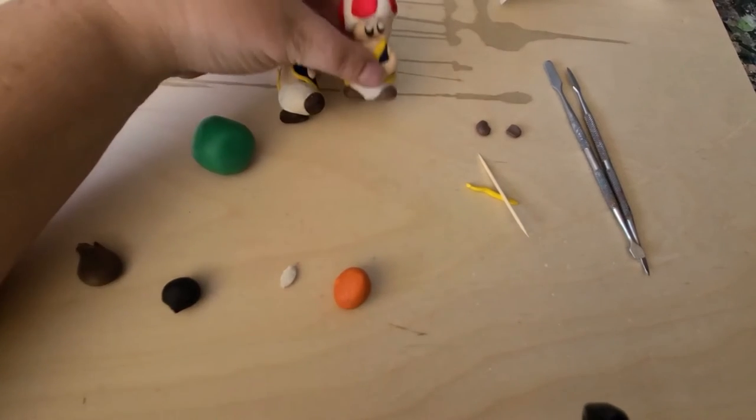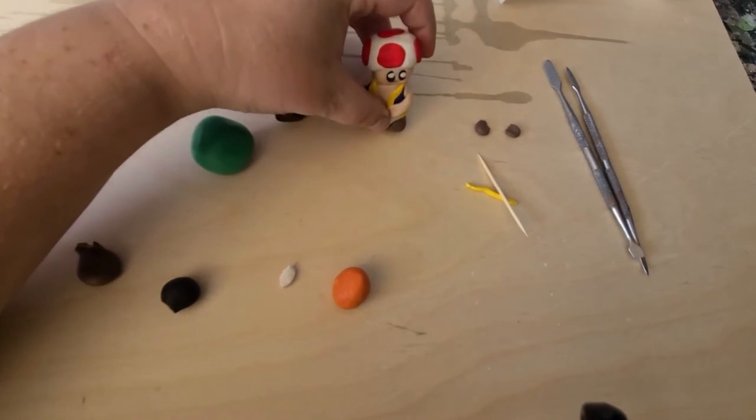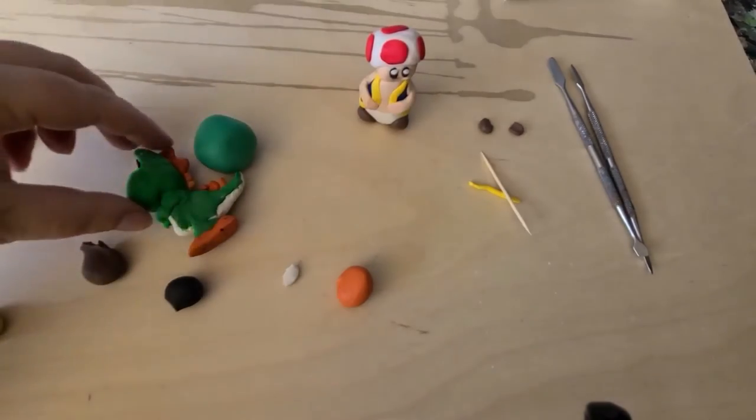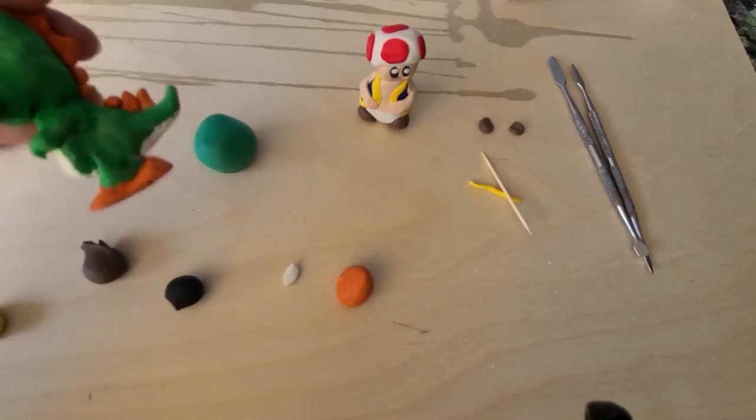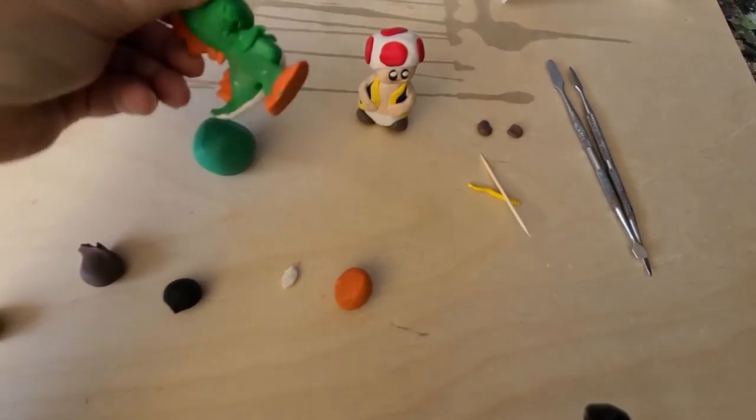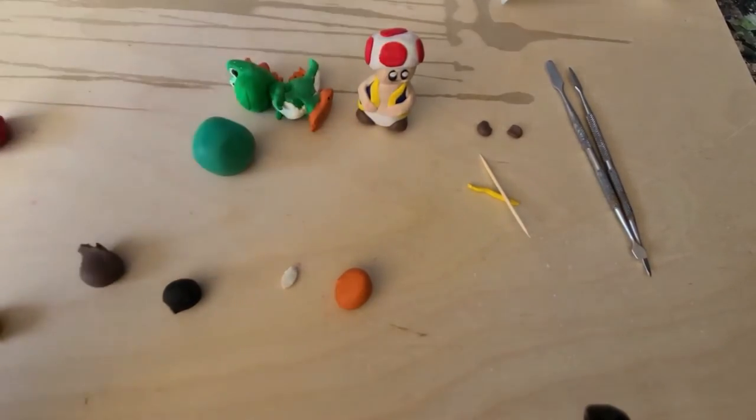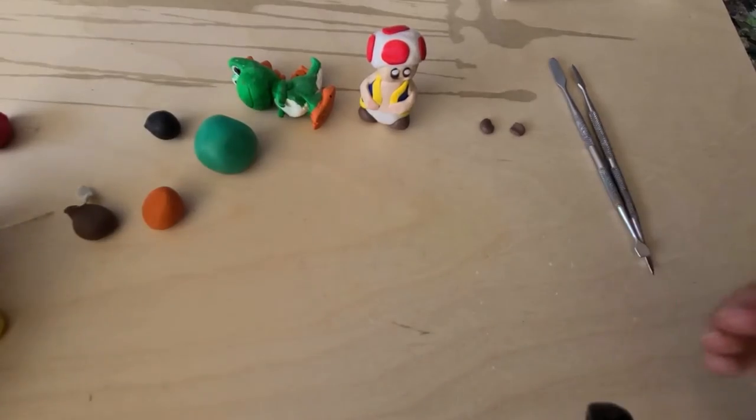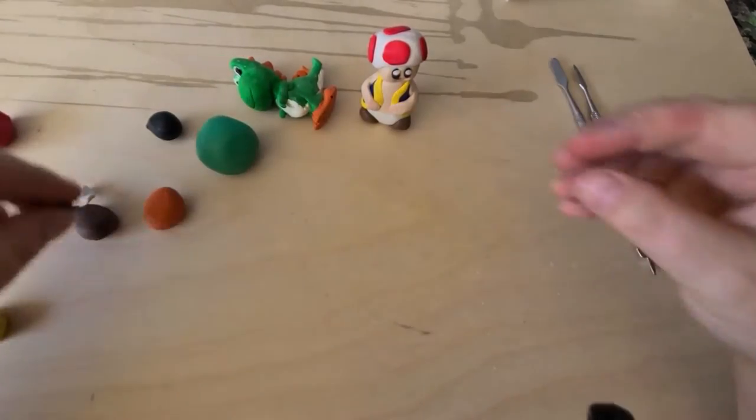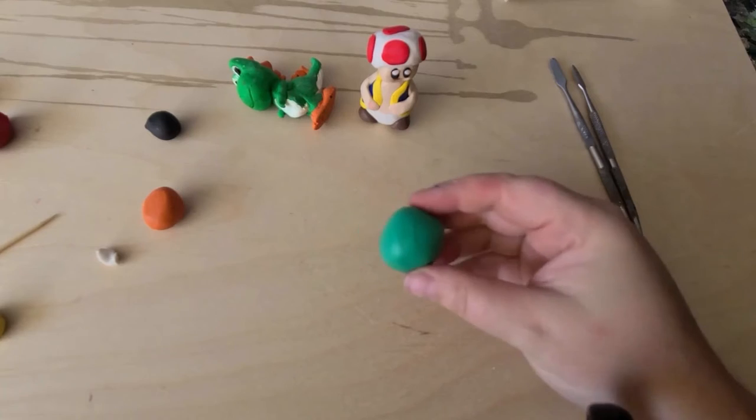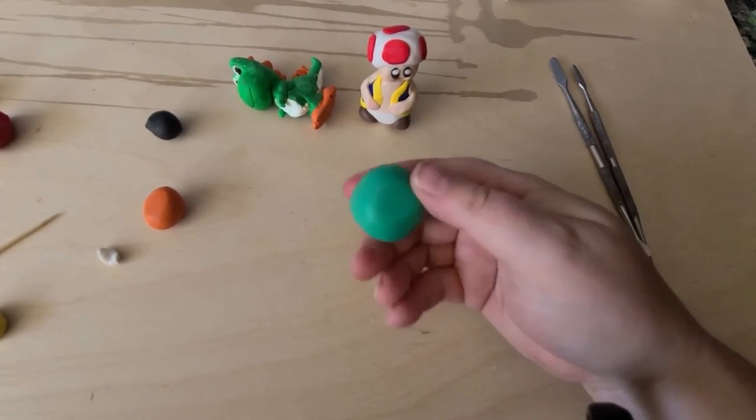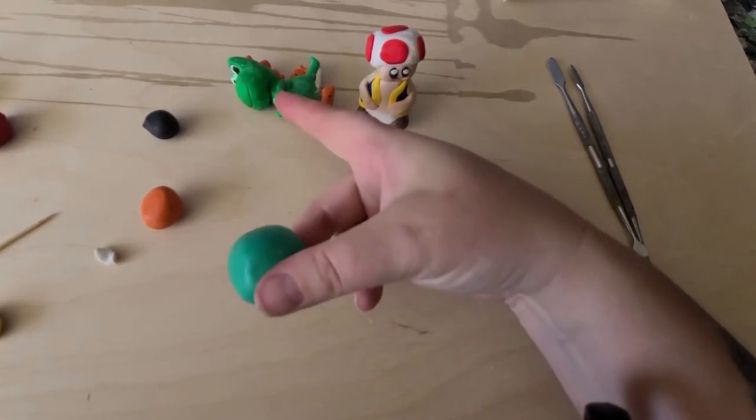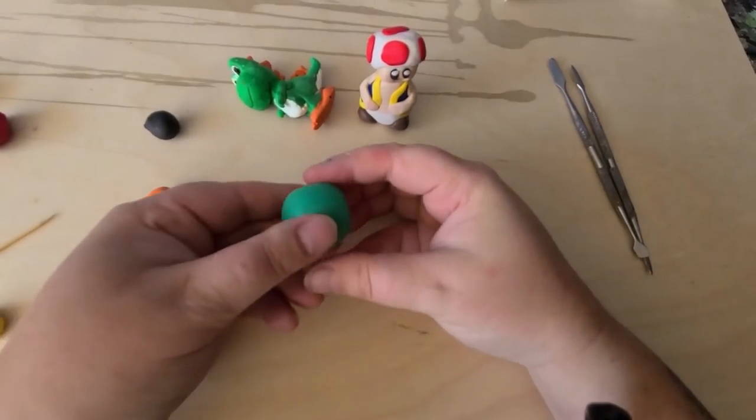So I'm going to put Toad off to the side for a minute. He can watch us create his friend Yoshi. So Yoshi's a little bit different, obviously. The shape of his body is very different from Toad, but it's all very similar. So I'm just going to move some of these pieces off to the side so we've got a clear space to work. So I'm going to start with the green. Now if your hands are really red, it may be worth washing your hands before you start handling the green.